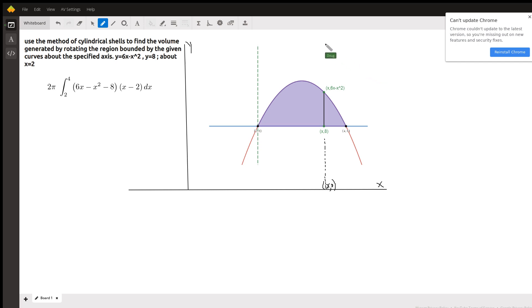And we want to set up the integral using the cylindrical shell method, which means that our typical shell will be parallel to the axis of revolution, which of course is this green dashed line.